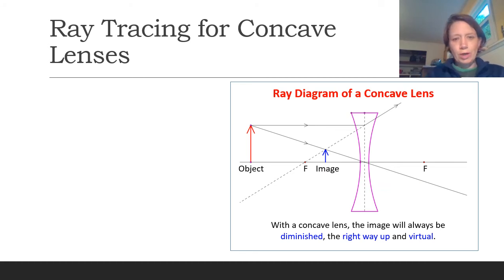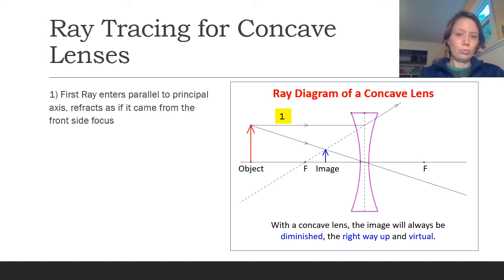When you're doing ray tracing for concave lenses, you just need to remember those basic rules. We've got two light rays that we're going to use. The first is that rule: the light ray enters parallel to the principal axis, and then it bends as if it came from the front side focus. We're doing that bending right here at the axis of symmetry. I'm just going to line up a ruler from the focus to that location at the middle of the axis of symmetry and draw my real light ray out from there.